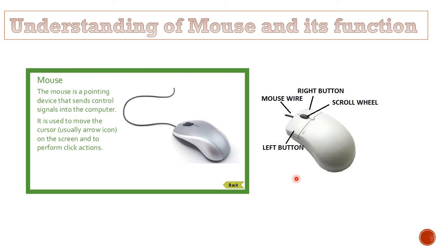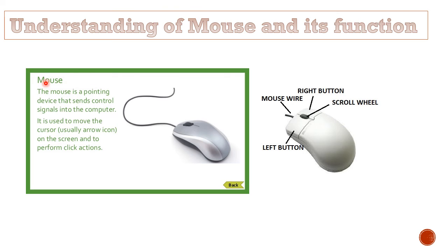Then you have the understanding of mouse and its function. Students, the mouse is a pointing device which can be used on your screen. As you can see, the mouse has three buttons: one is left, one is right, and one is a scrollbar. You can use these buttons and scrollbar to perform work on the computer. I am showing this pointer — this is because of the mouse. Pointing device means to point the device on the computer. You should also know the different parts of the mouse.